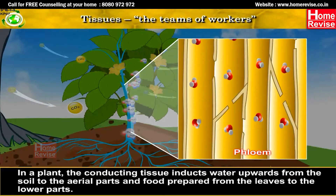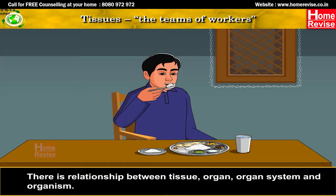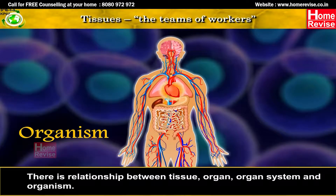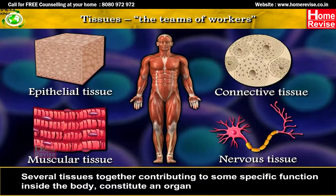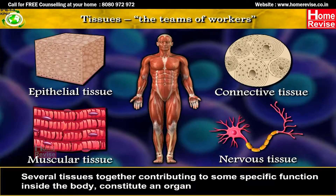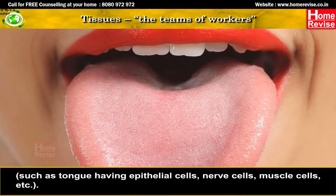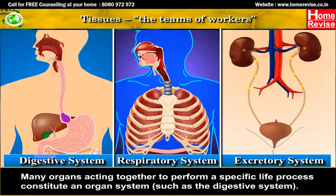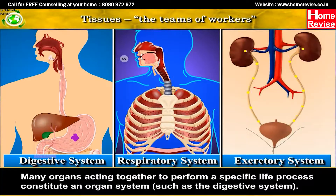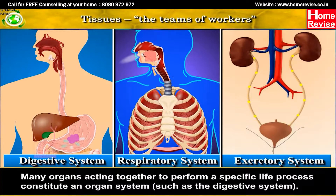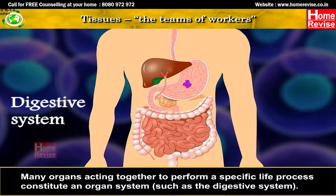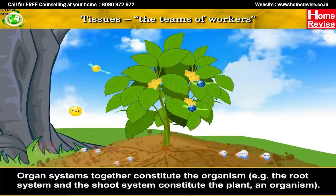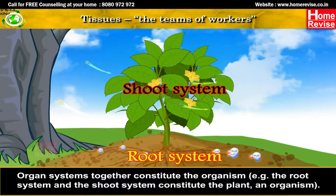In a plant, the conducting tissue conducts water upwards from the soil to the aerial parts, and food prepared from the leaves to the lower parts. Several tissues together contributing to a specific function inside the body constitute an organ. Many organs acting together constitute an organ system, and organ systems together constitute the organism.